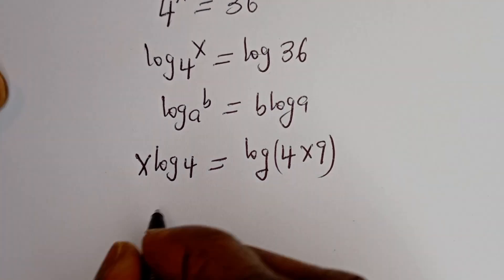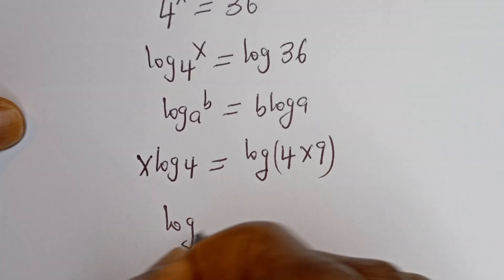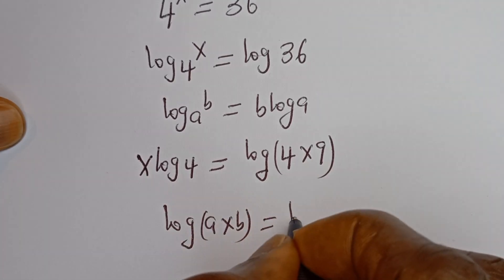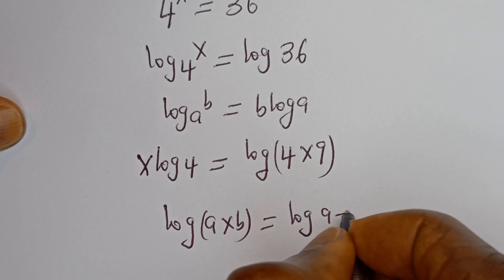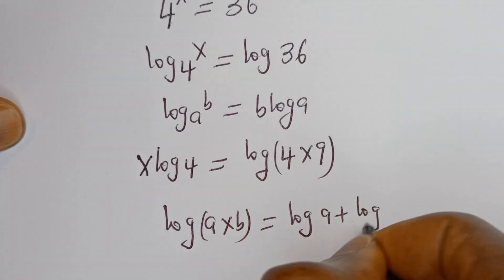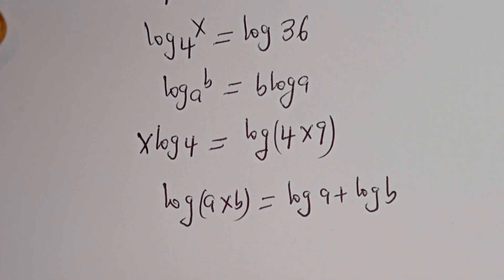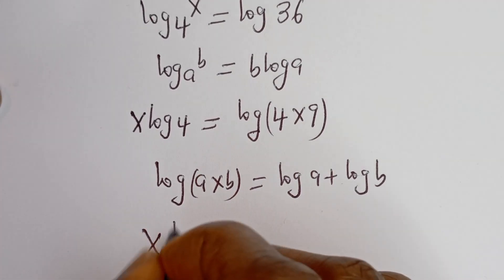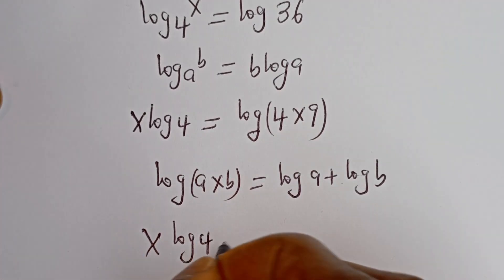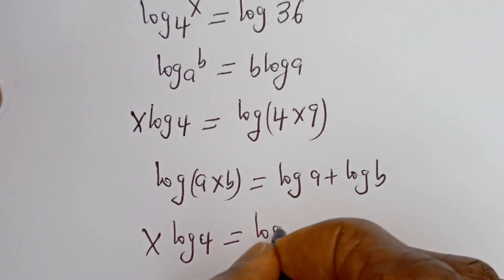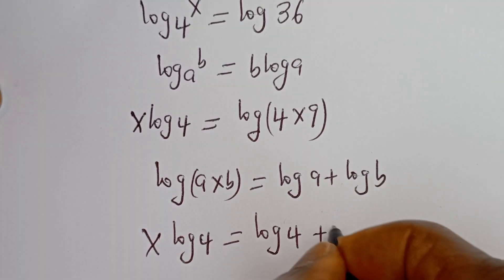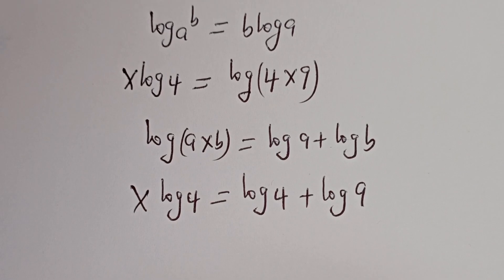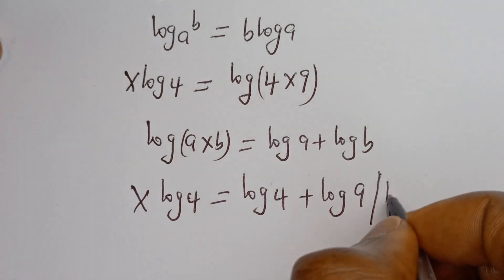Now if you have log a multiplied by b, this is equal to log a plus log b. So this can be written as x log 4 is equal to log 4 plus log 9. Now let's divide all through by log 4.